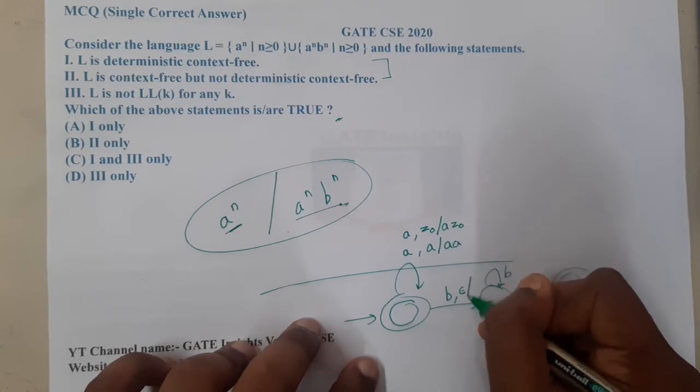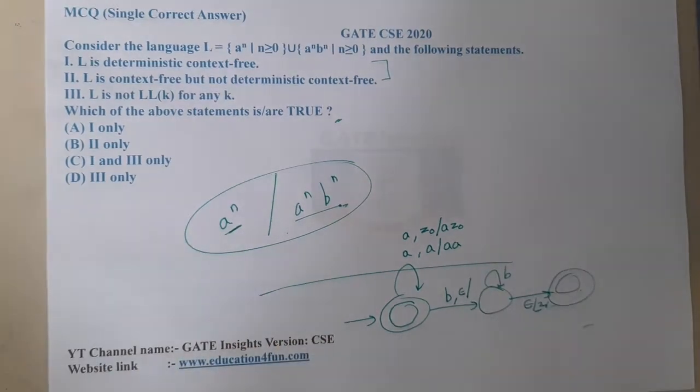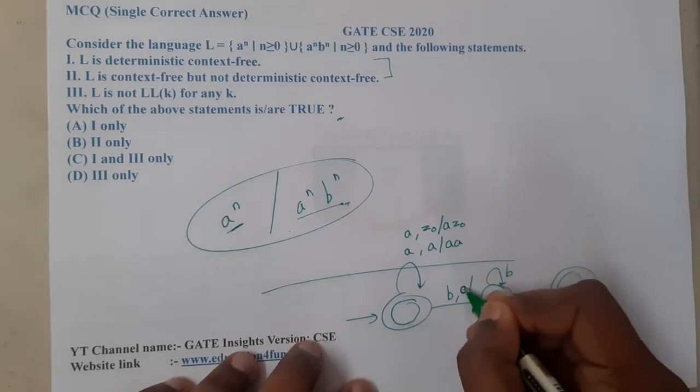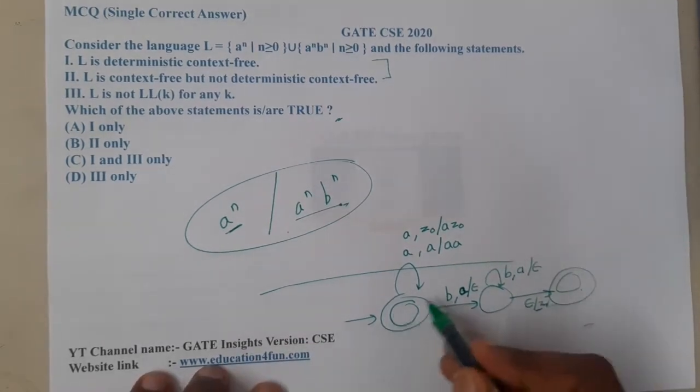How will we write? So b comma epsilon. B comma a - so if my top is 'a', I am going to pop it. Similarly here also, if my top is 'a', I am going to pop it. So in that way we can write.